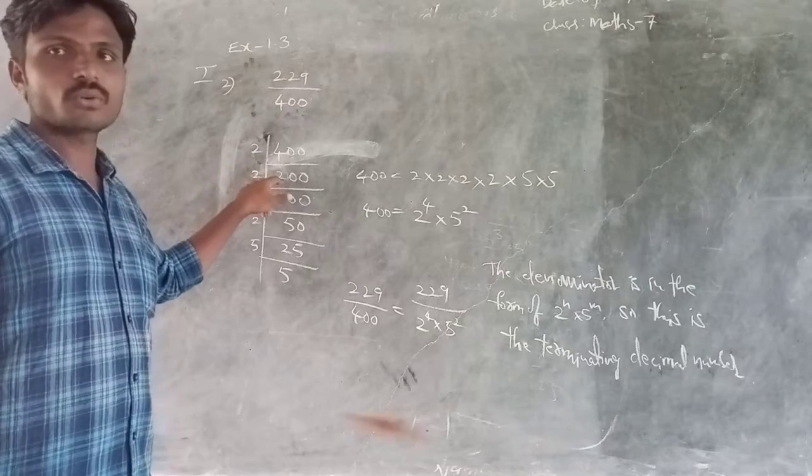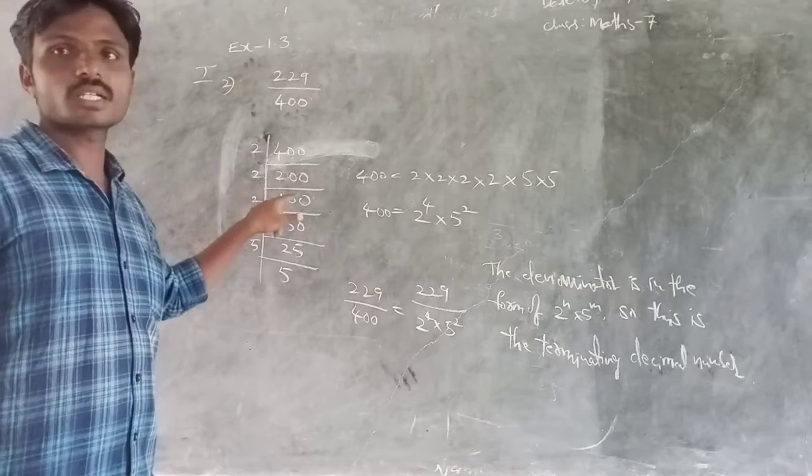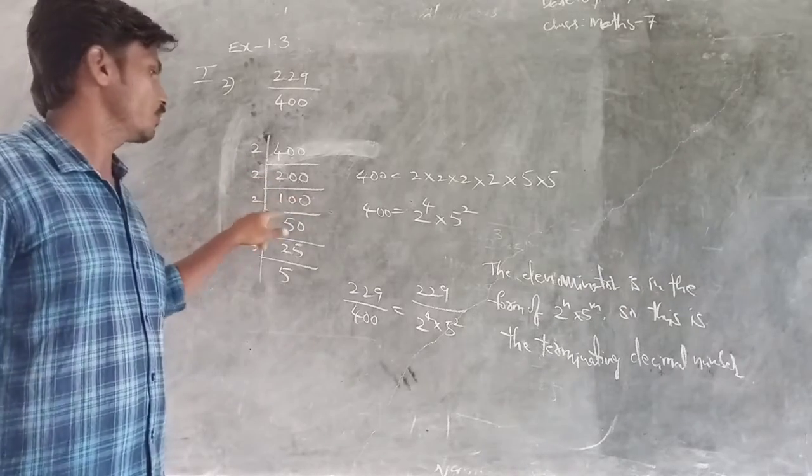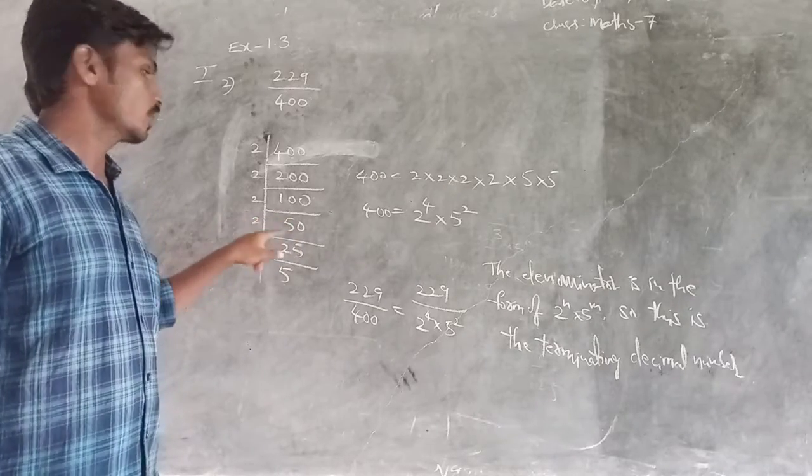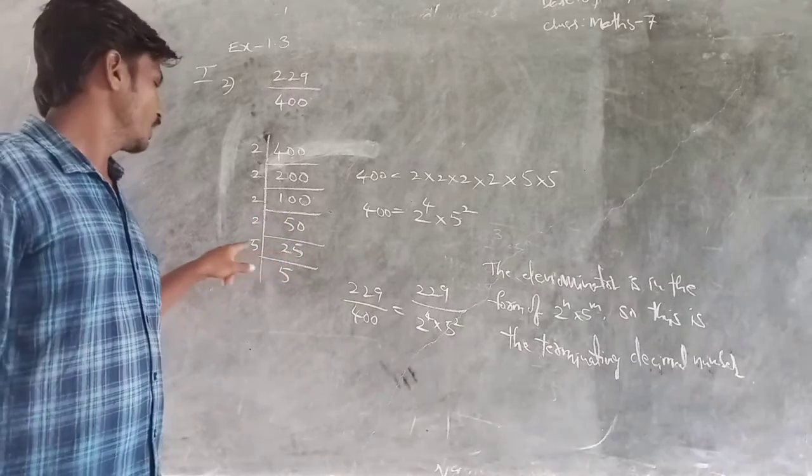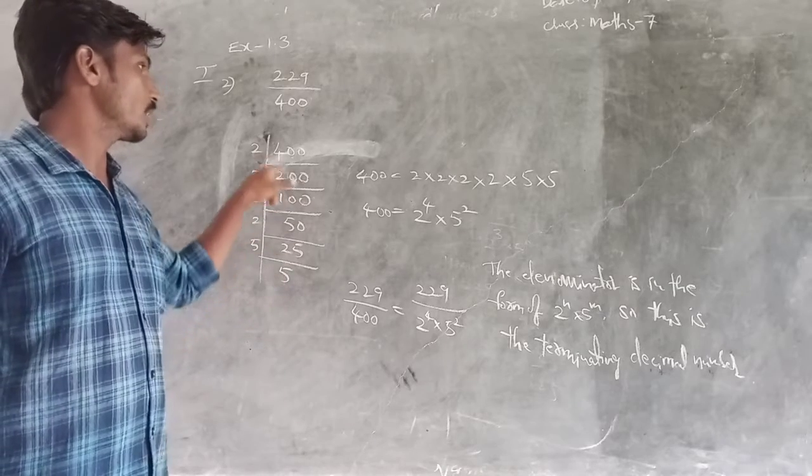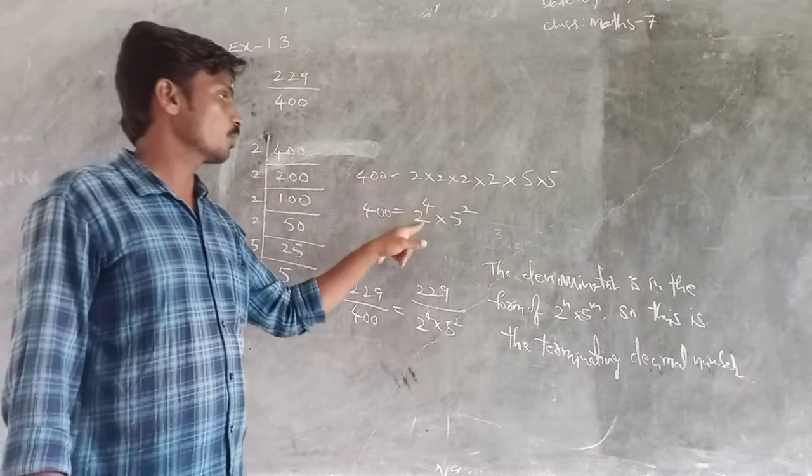2 into 400 is 200, 2 into 200 is 100, 2 into 100 is 50, 2 into 50 is 25, 5 into 25 is 5. So this 400 can be written in the form of 2 and 5.